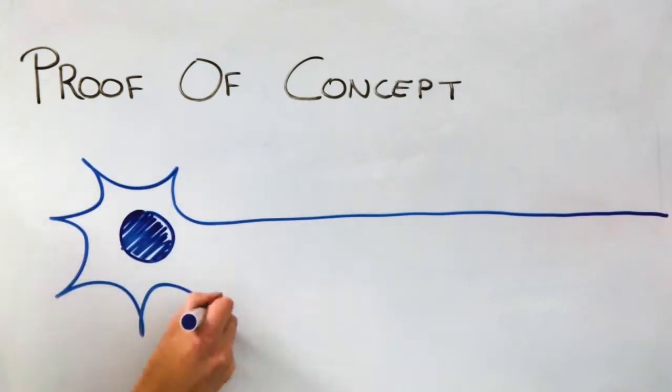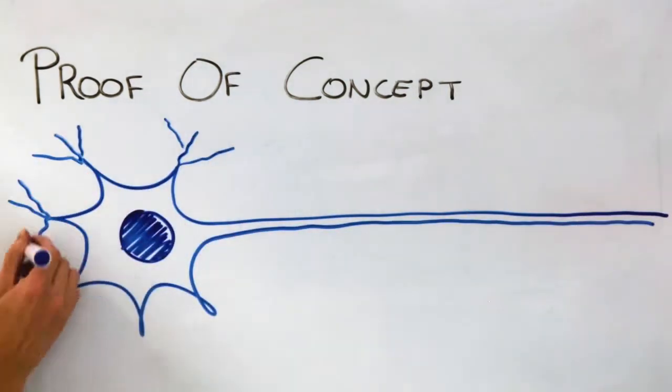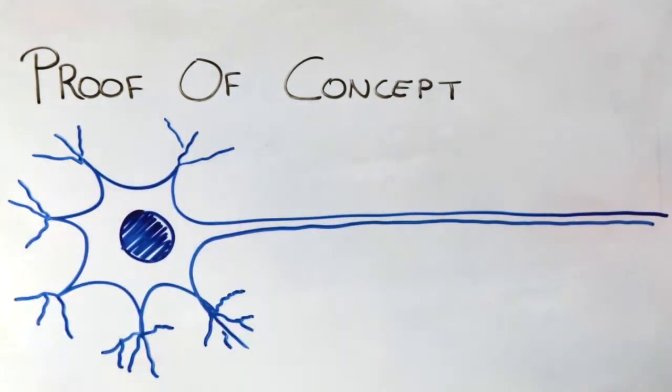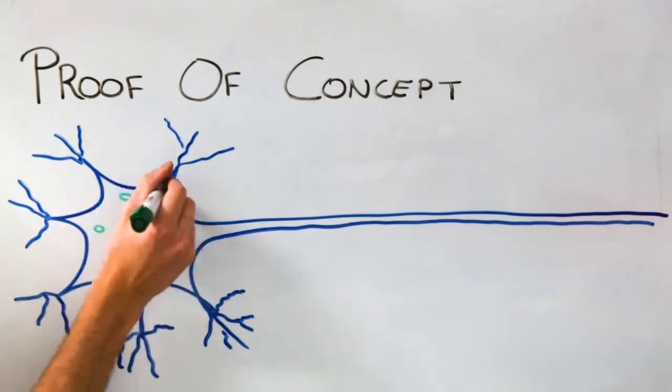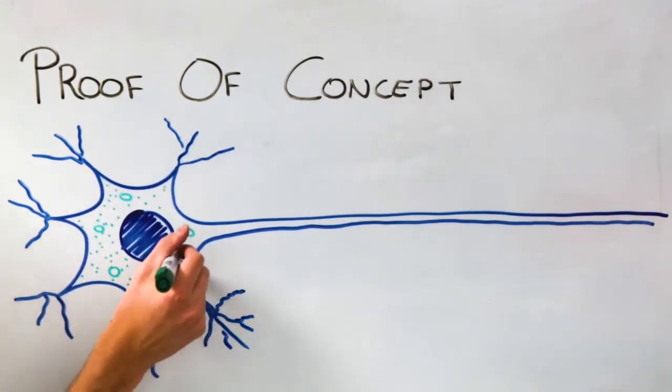This is a neuron. Humans have about 100 billion of them in their brains. They work by making connections in order to share information that allows bodies to move or think, for example.